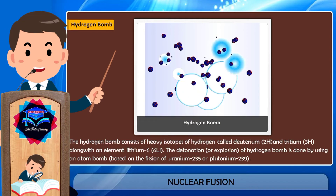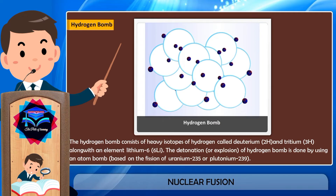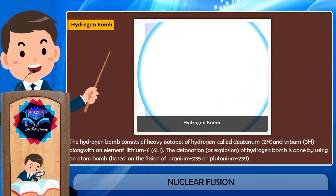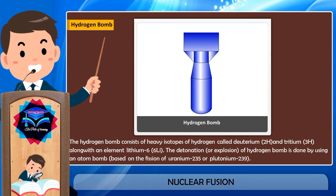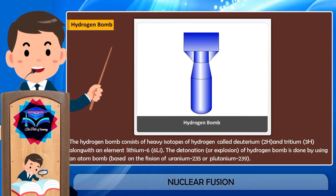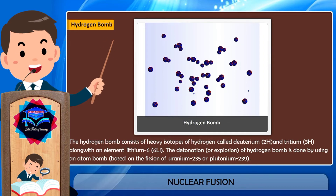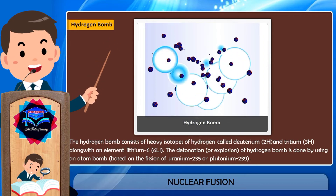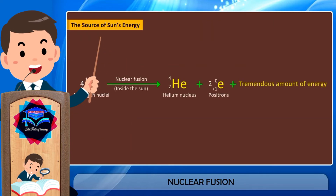The hydrogen bomb consists of heavy isotopes of hydrogen called deuterium (²H) and tritium (³H), along with the element lithium-6 (⁶Li). The detonation of a hydrogen bomb is done by using an atom bomb based on the fission of uranium-235 or plutonium-239. The hydrogen bomb is based on the thermonuclear fusion reactions of heavy hydrogen atoms like deuterium and tritium to produce helium atoms at very high temperature.